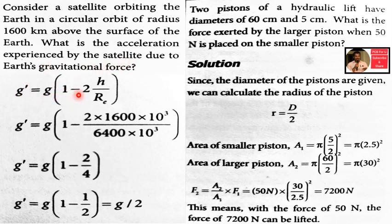The formula for gravitational acceleration at height h is g_das equal to g into (1 - 2h/Re). At a particular height, h is 1600 km. The radius of the Earth, Re, is 6400 km. That is a constant value.